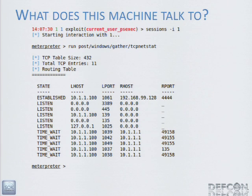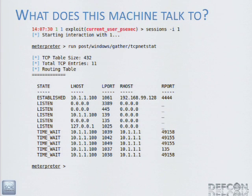This uses Railgun — if you're interested in Railgun and the Windows API, I highly recommend you stick around for Dave's talk after this one. He's going to talk about owning all the things through Railgun, which is a Windows API bridge for Metasploit.